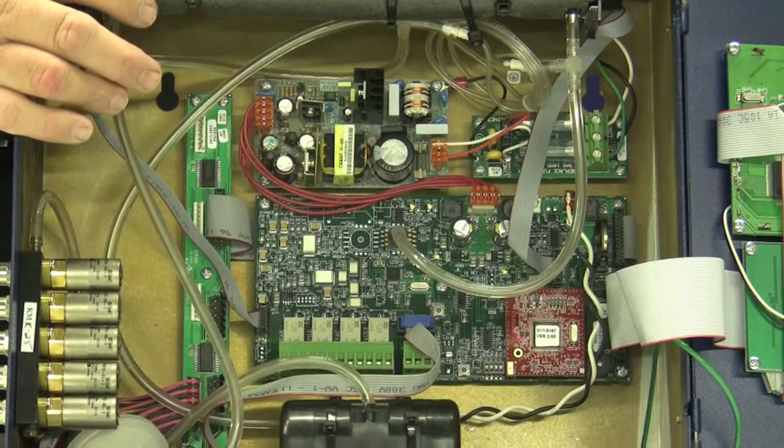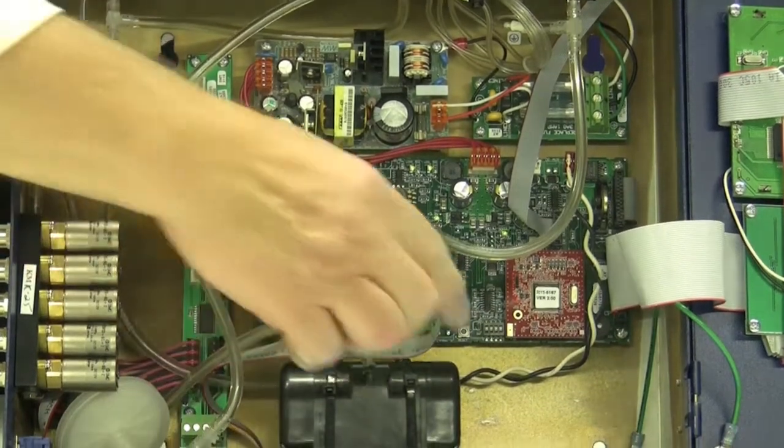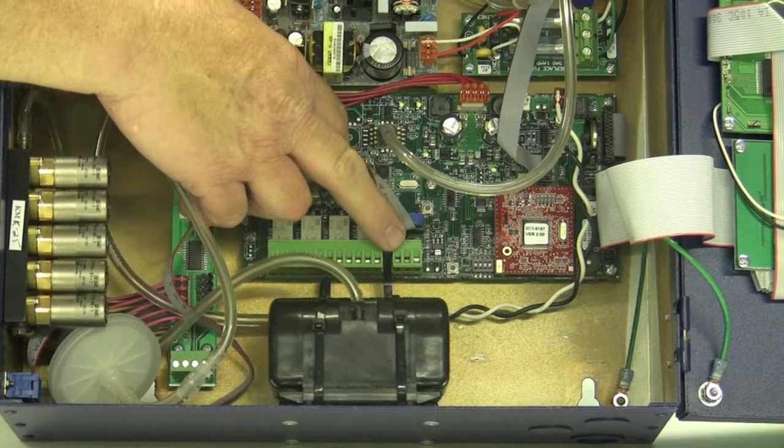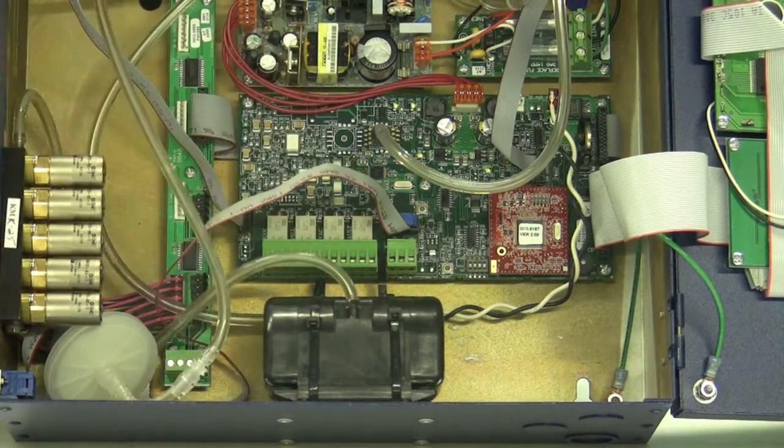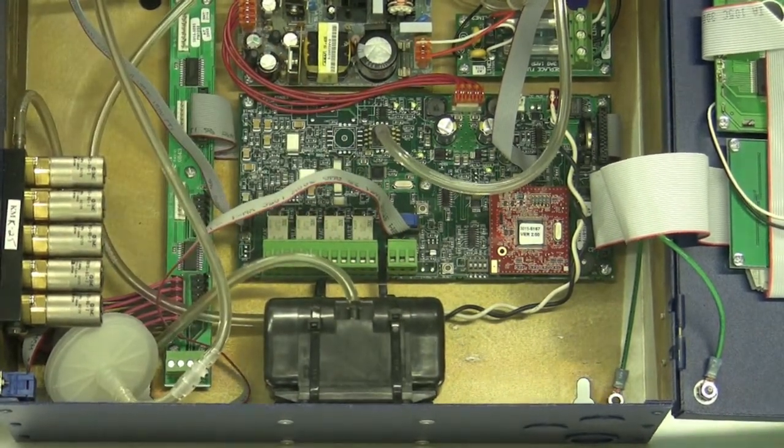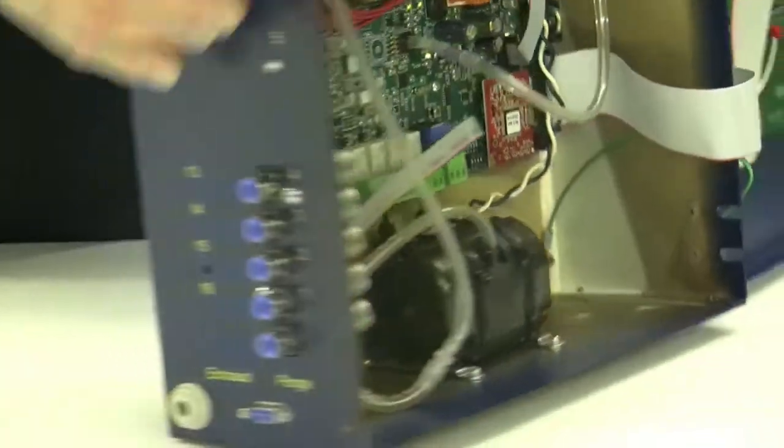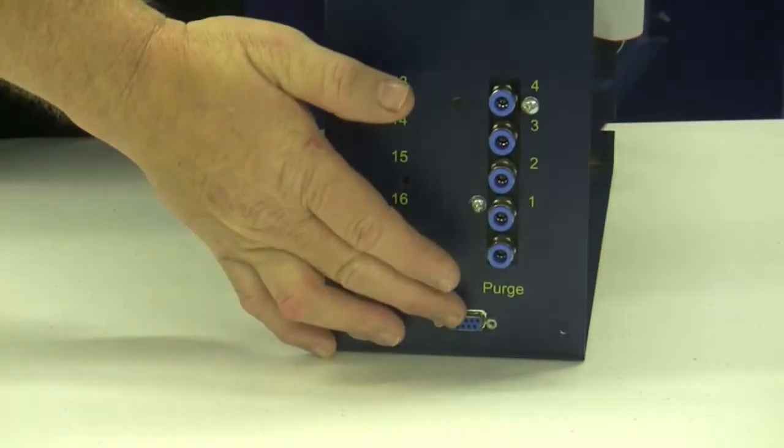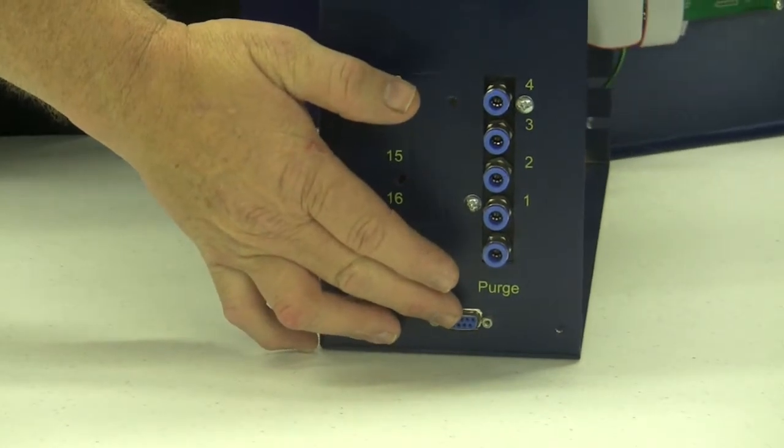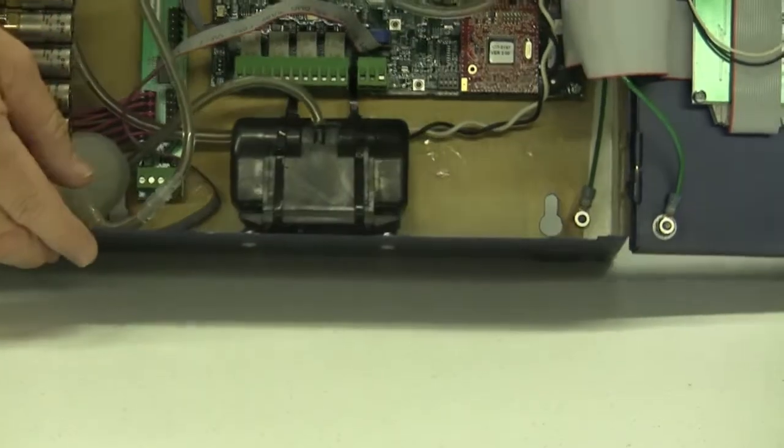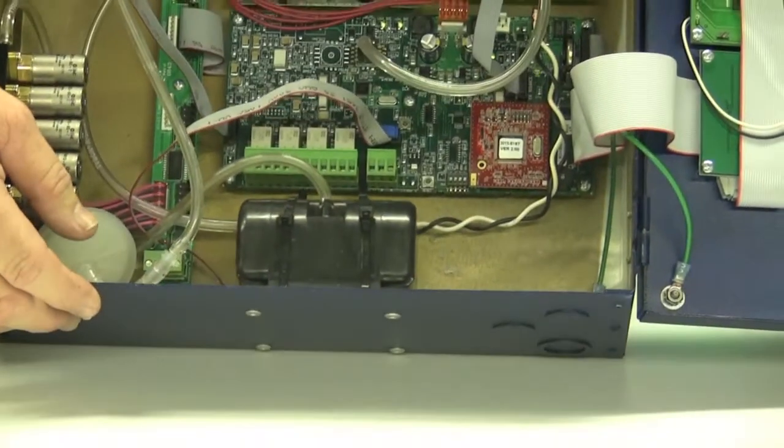The unit comes standard with Modbus. That is a standard feature which can be accessed through the Modbus connector, which is right here just to the left of the relays. Everything is easily programmed on board through the RS-232. That's over here on the side we saw earlier. The RS-232 comes in and you can update the chip, the program, the software, and download any information that you need.